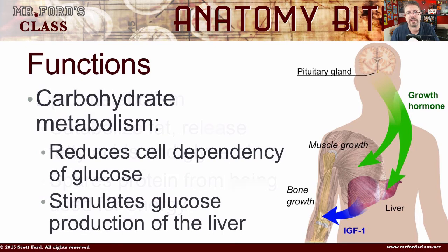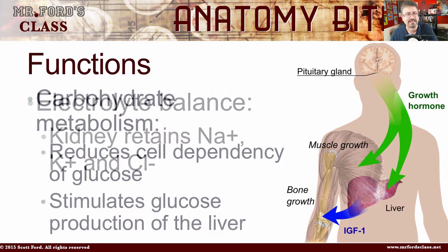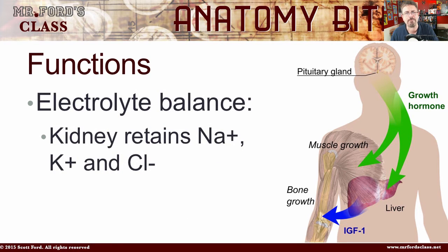Another function is carbohydrate metabolism. Growth hormone is going to reduce the cell dependency on glucose — this helps keep glucose available for the brain — while really trying to get energy from fatty acids instead. It's also going to stimulate glucose production in the liver. Finally, it deals with electrolyte balance: it makes the kidneys retain sodium, potassium, and chloride.